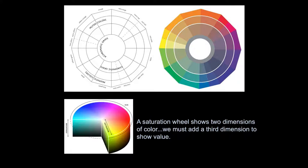A saturation wheel shows two dimensions of color: it shows the hue — the rainbow position of the color — on the outside of the wheel, and then as the colors move in toward the center, they get grayer and grayer until you reach achromatic grays in the very center. You have to have a third dimension to show all the aspects of color, so you can't really show everything about color on a wheel — you have to have a solid.